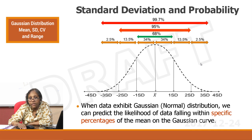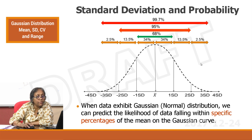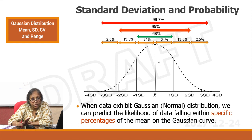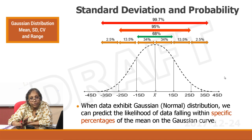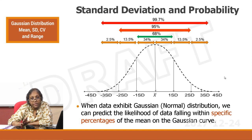This is the key to the Gaussian curve when interpreting quality control data. In a stable analytical system, once the mean and standard deviations are defined, they do not shift. Any shift from these percentages — in many different kinds of ways we will talk about later — indicates instability of the analytical system.